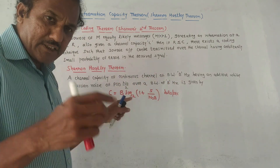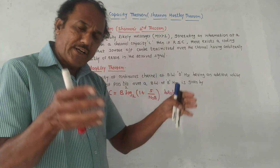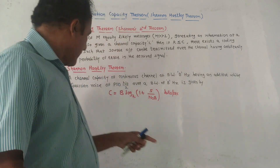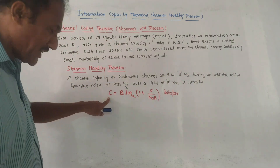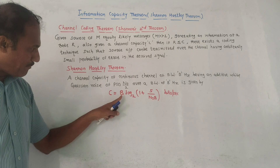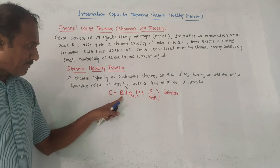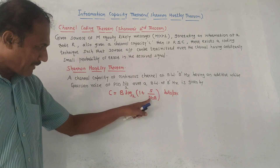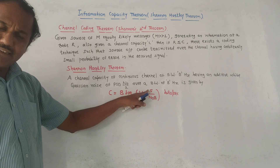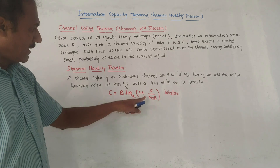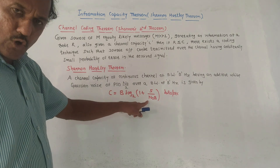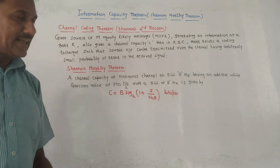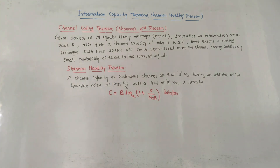...the channel capacity is given by C = B log₂(1 + S / (N₀·B)) bits per second, where S means signal power. That is the statement of the Shannon-Hartley theorem.